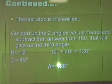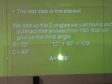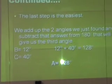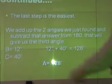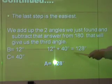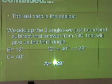The last step is the easiest. Of course we then add up the two angles we just found and subtract that answer from 180. That will give us the third angle. So B equals 12 degrees, C equals 40 degrees. So 12 degrees plus 40 degrees equals 52 degrees.